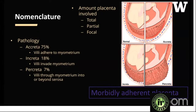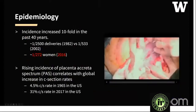Nomenclature used for PAS includes accreta, seen in about 75% of cases, where the villi only adhere to the myometrium. Increta is seen in about 18%, where the villi actually invade into the myometrium. Percreta is seen in about 7% of cases, where the villi extend through the myometrium into or beyond the serosa. The amount of placenta involved can also be variable — total, partial, or focal.